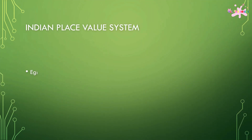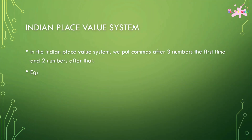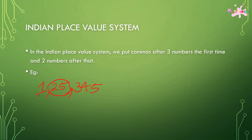Indian place value system. In the Indian place value system, we put commas after three numbers the first time and two numbers after that. For example, like 1,00,25,000. We put one comma after two numbers. But when we are in the ones, tens, and hundreds place, we put no commas in between, like 345. So we will read this as 1,00,25,000,345.